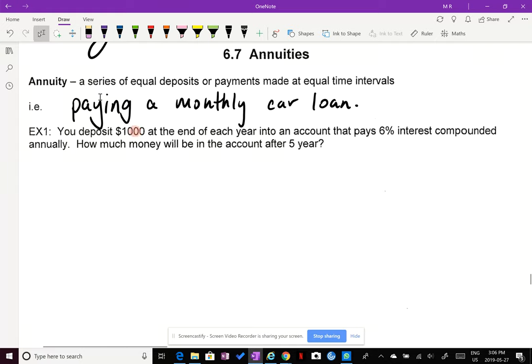Okay. So let's look at an example. Example one, you deposit $1,000 at the end of each year into an account that pays 6% interest compounded annually. How much money will be in the account after five years? So instead of depositing something once, we deposit it regularly. So the regular interval is every year. So $1,000 at the end of each year. So my R is going to be $1,000. We're looking at compounding it every year for five years. So n is equal to five. And my interest rate is 6% compounded every year. So 6% as a decimal is 0.06. And I don't have to divide it because it's compounded annually.